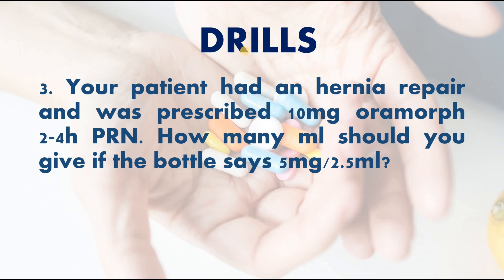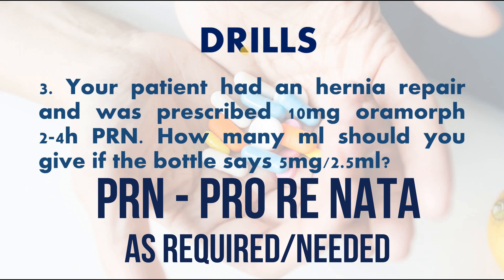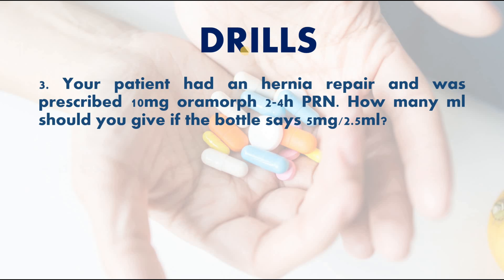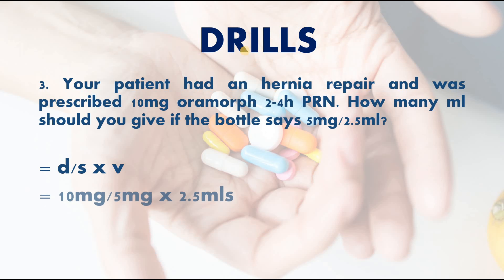Next: your patient had a hernia repair and was prescribed 10 milligrams Oramorph every 2 to 4 hours PRN. How many mils should you give if the bottle says 5 milligrams per 2.5 mils? Oramorph is a morphine derivative given for pain, and PRN means as needed. Using the formula: desired divided by stock times volume — 10 mg ÷ 5 mg × 2.5 mils = 5 mils.